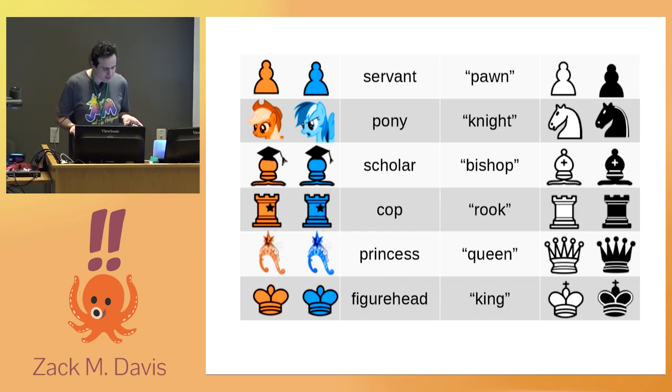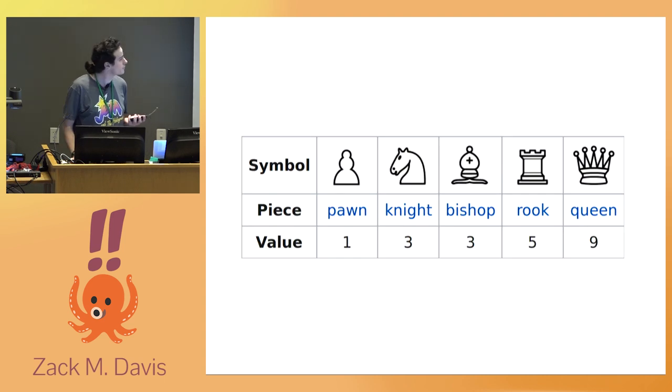So consider a two-player board game like chess, or indeed any two-player, zero-sum, perfect information game. Suppose we know how to calculate how good a particular board position is for a player. In chess, the way we do this is by assigning a point value to each type of piece and totaling up the remaining point values for each piece for each player.